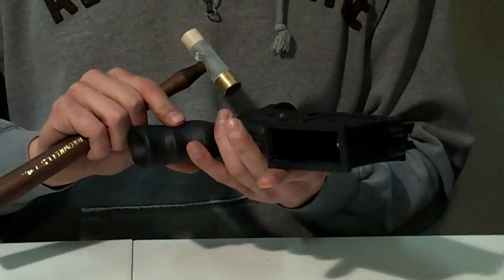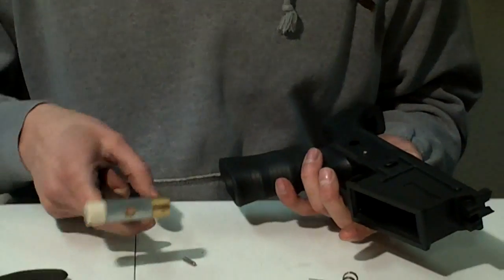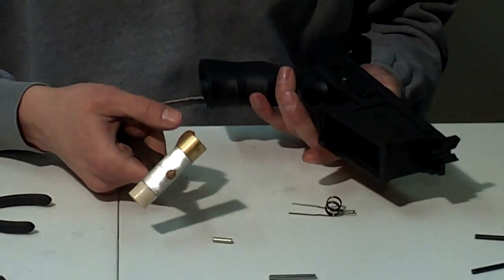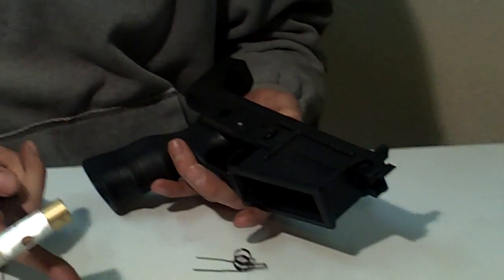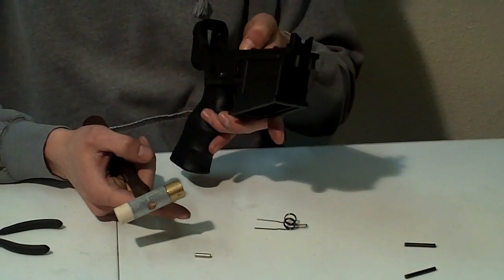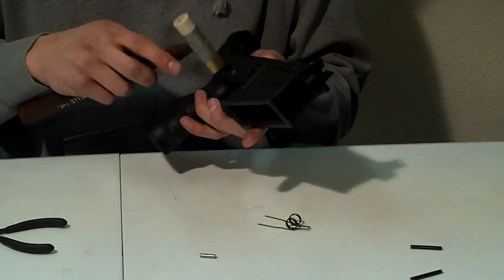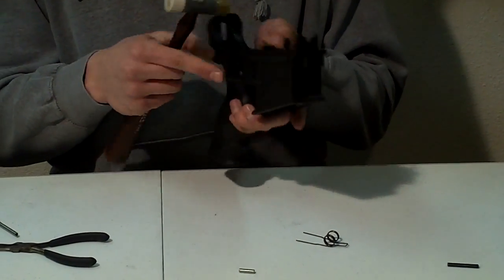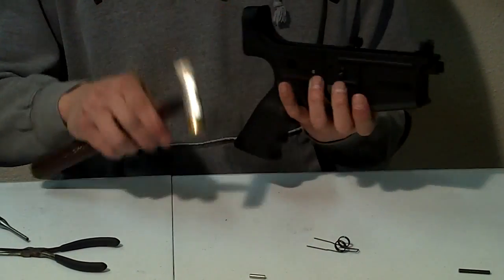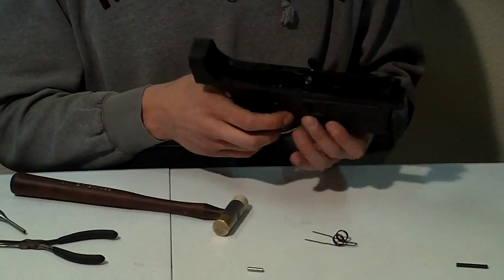You can do one of two things. You can either save that for later or discard it. It's totally up to you. But if you ever plan on taking your lower apart it's nice to have that slave pin so you don't have your disconnector and disconnector spring and everything coming apart. Go ahead and drive that in. Make sure everything's free, which it is.